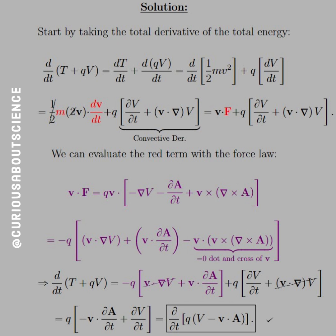So, start by taking a total derivative of the total energy. So here we have d by dt of the kinetic and the potential. So, dT over dt plus d(qV) over dt. Okay, well, what we know about kinetic is that it's one-half mv squared, and what we know about the potential is that we can move the charge Q through. So, let's go ahead and get rid of it.